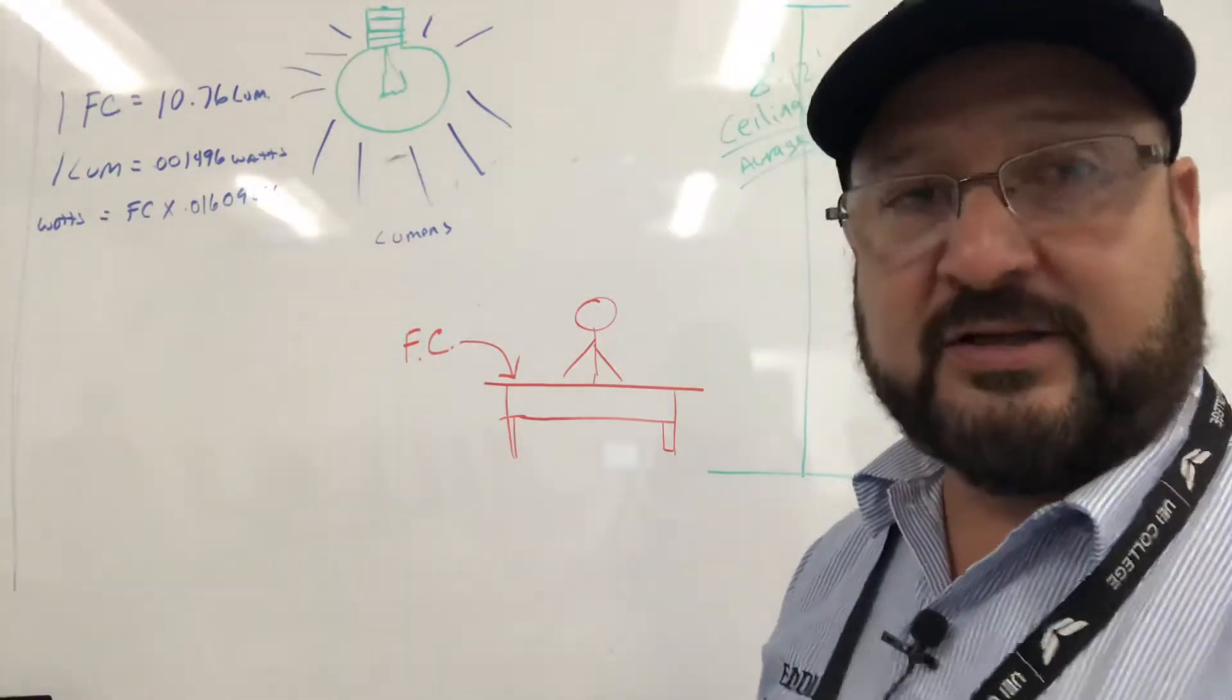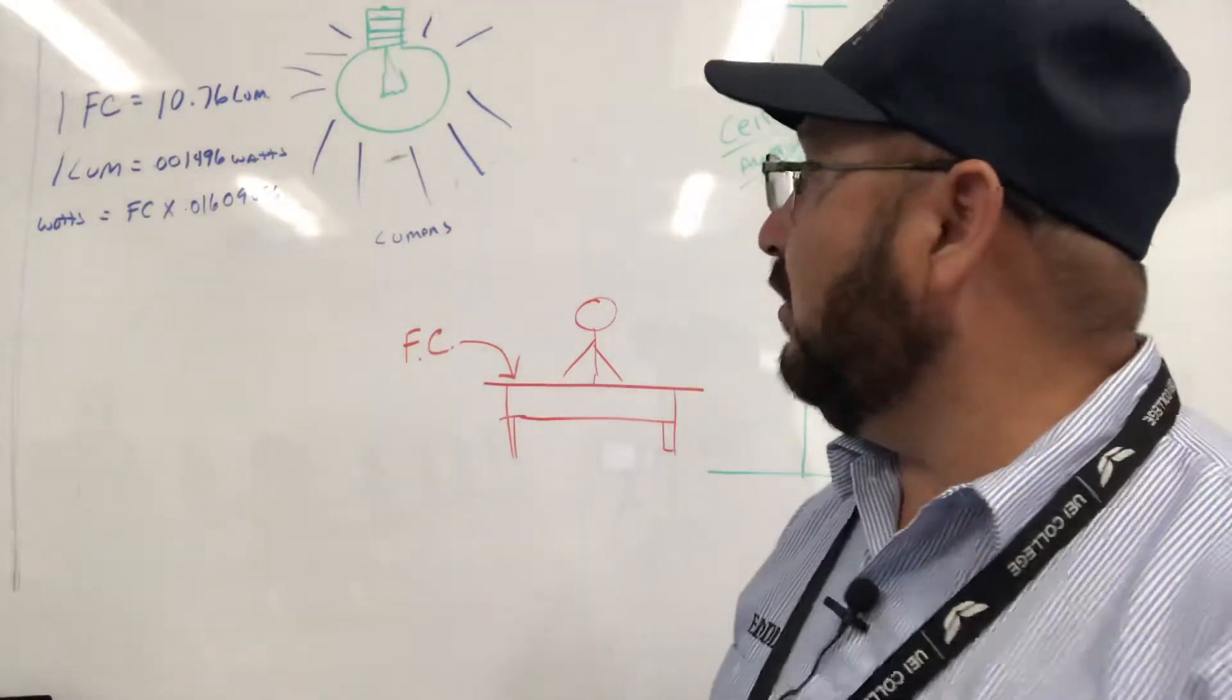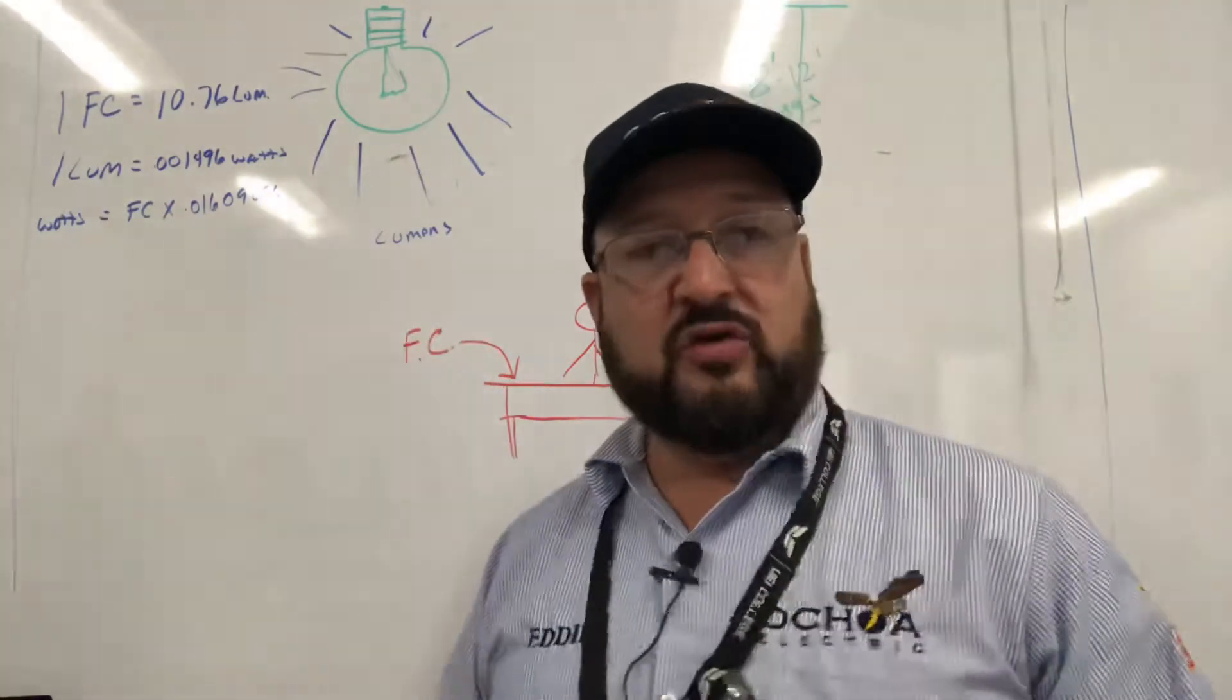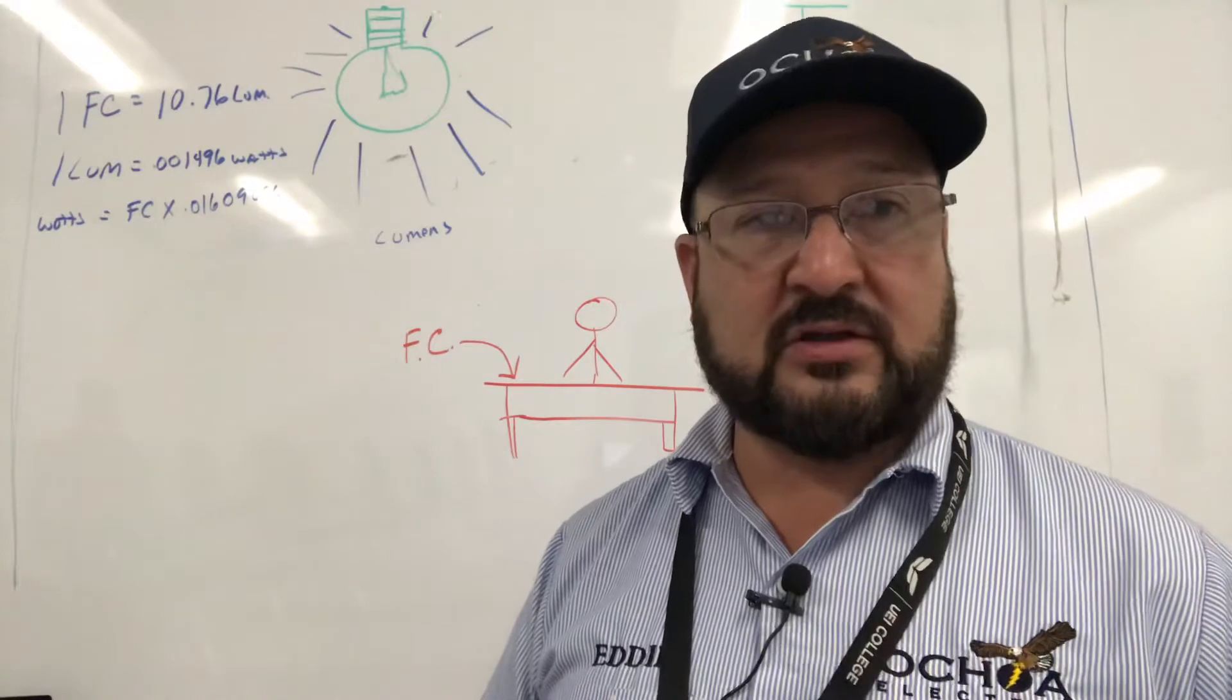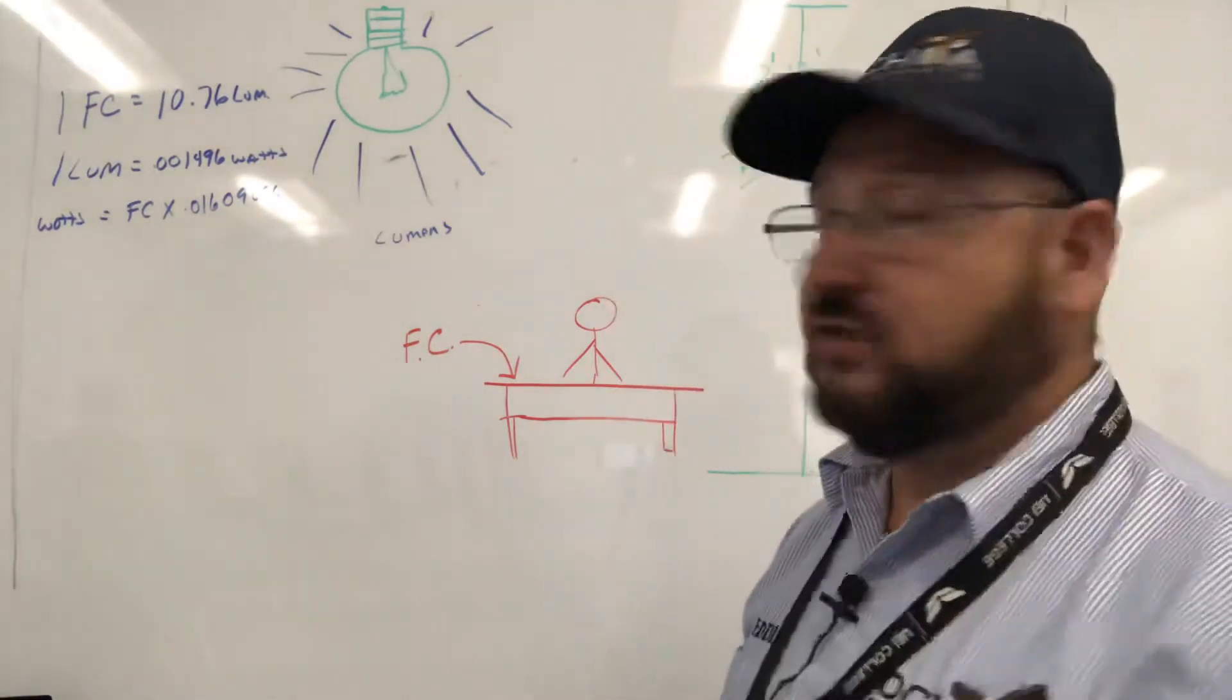We need this because our classrooms are full of light and we call that lumens. There's a specific amount of lumens you need per classroom, parking lots, kitchens, and there's a standard level of lumens that you need.